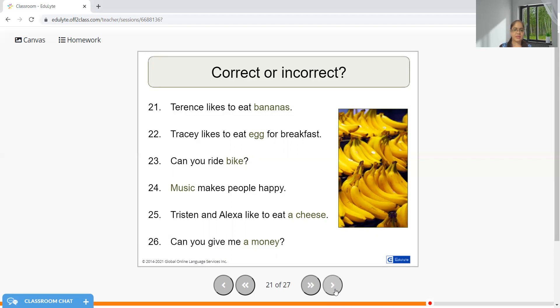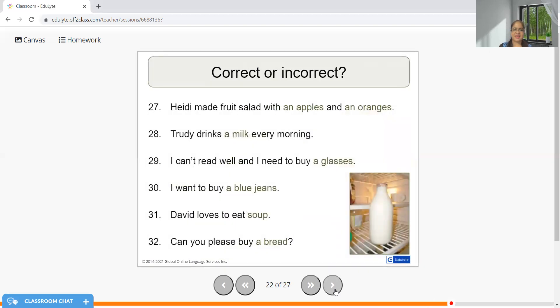Can you give me a money? No. Can you give me money? No article required here. Heidi made fruit salad with apples and oranges. If it is not one in quantity, we will not be using AN before it. Thirty drinks milk every morning. I can't read well and I need to buy glasses. I want to buy a blue jeans. This is right?